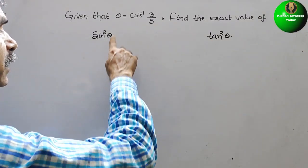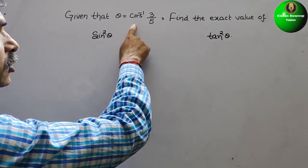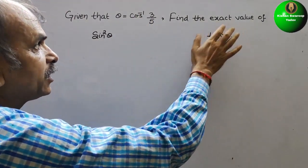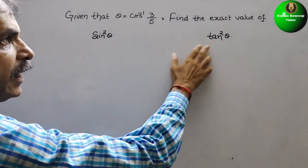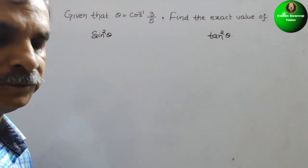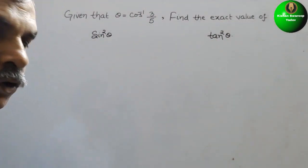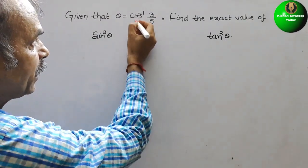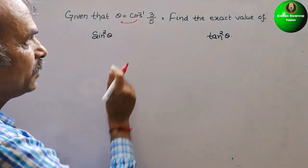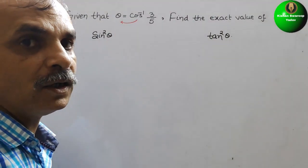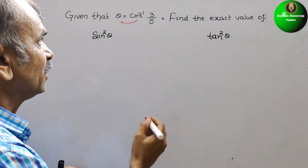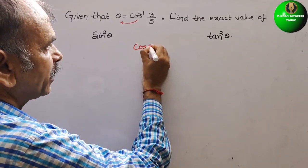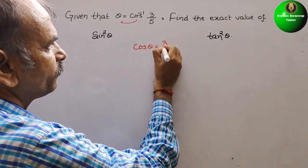Your question is: given that theta is equal to cos inverse of 3 by 5, find the exact value of sine square theta and tan square theta. So now, what we have to do is just bring this to this side. It will be cos theta is equal to 3 by 5.